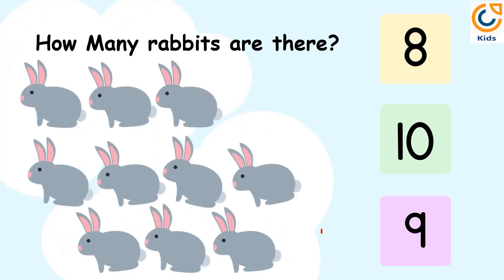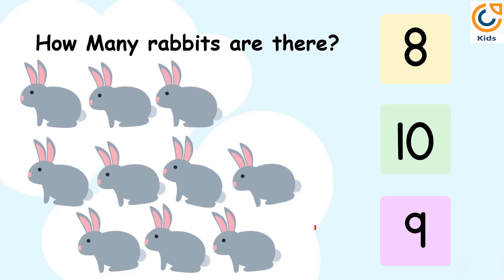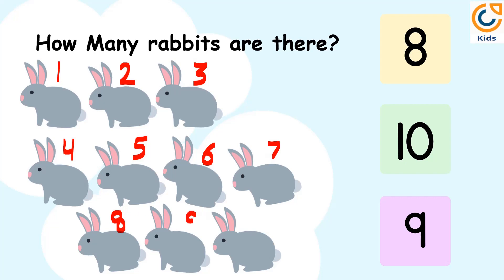How many rabbits are there? Let's count the number of rabbits. 1, 2, 3, 4, 5, 6, 7, 8, 9 and 10. There are 10 rabbits. So the answer is 10.